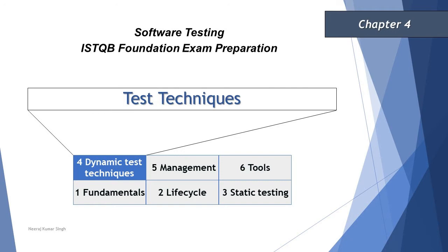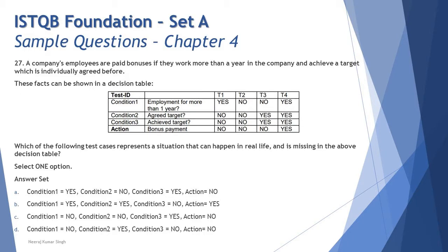Let's look into the next question for today, which is Question 27. A company's employees are paid bonuses if they work more than a year in the company and achieve a target which is individually agreed beforehand. This gives you the conditions: if three criteria are met, the output must be yes, otherwise it should be no. The employee must have completed one year, agreed to the target, and achieved the target.